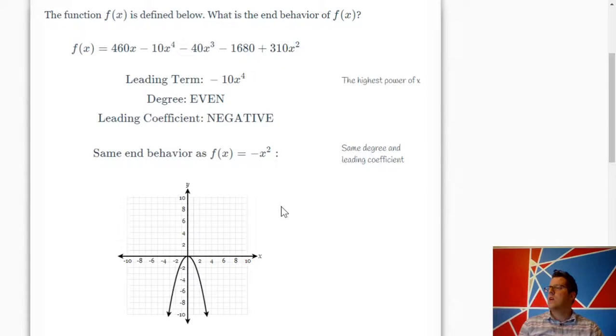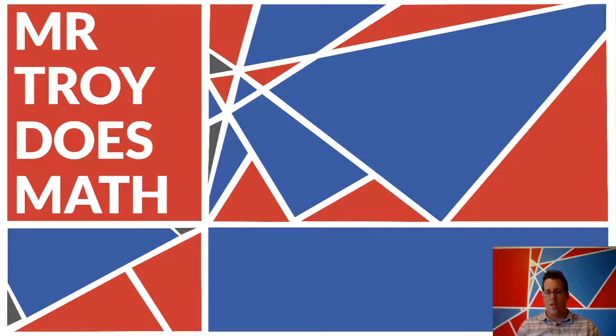Same degree and leading coefficient. Same type of degree, even, and leading coefficient negative. All right, I think that's as good a place as any to end. This is a short one. Oh, I get it. It's like his background. What do you know?